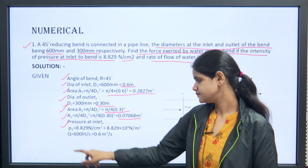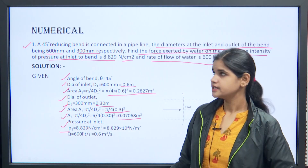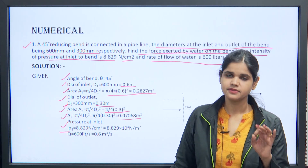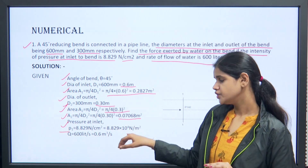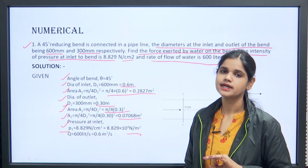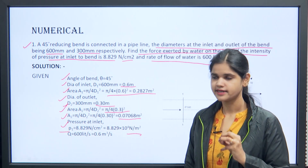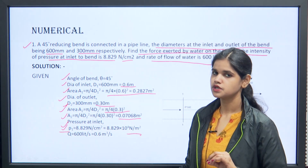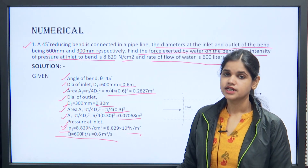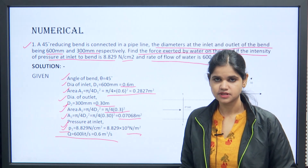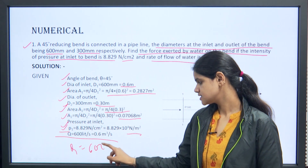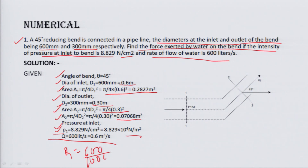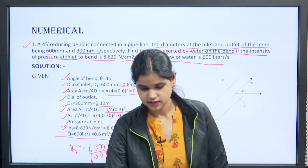Pressure at inlet P1 is given in N/cm². To convert to N/m², multiply by 10⁴. Discharge Q is given in litres per second; convert to m³/s: Q = 0.6 m³/s.